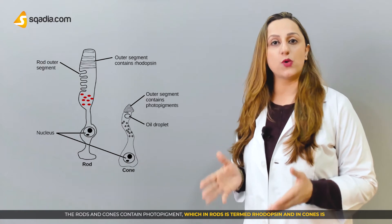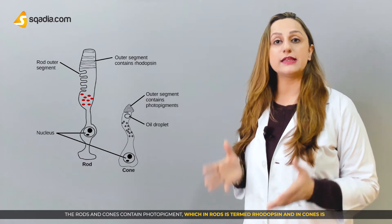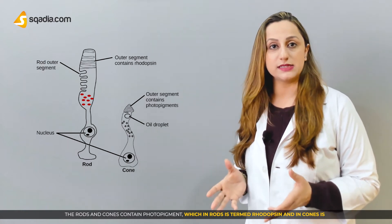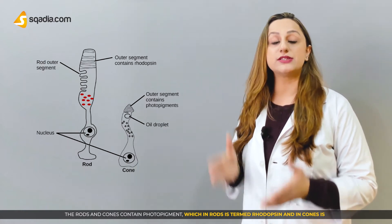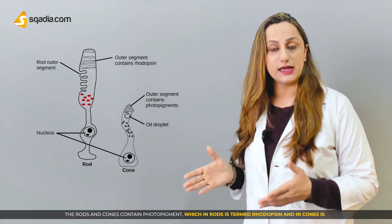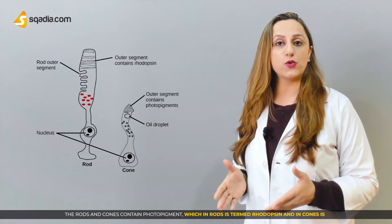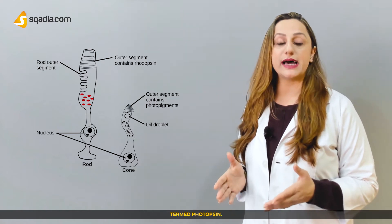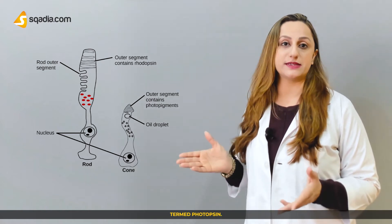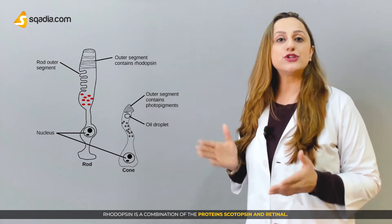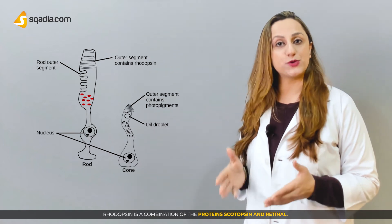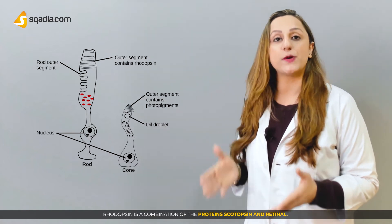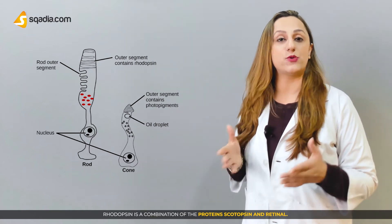The rods and cones contain the photopigment, which in rods is termed rhodopsin and in cones is termed photopsin. Rhodopsin is a combination of the proteins scotopsin and retinal.